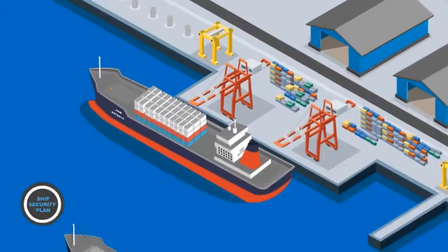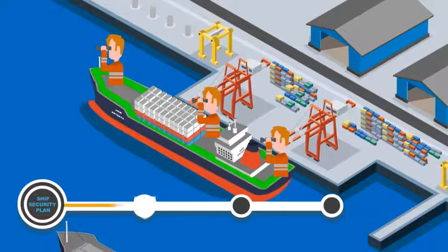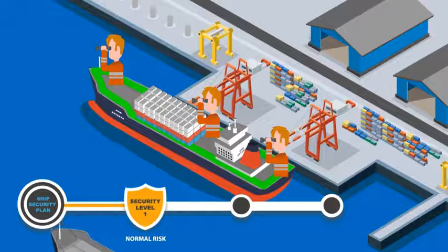At security level 1, all access points have to be monitored continuously, and a security lookout and patrol should be posted.